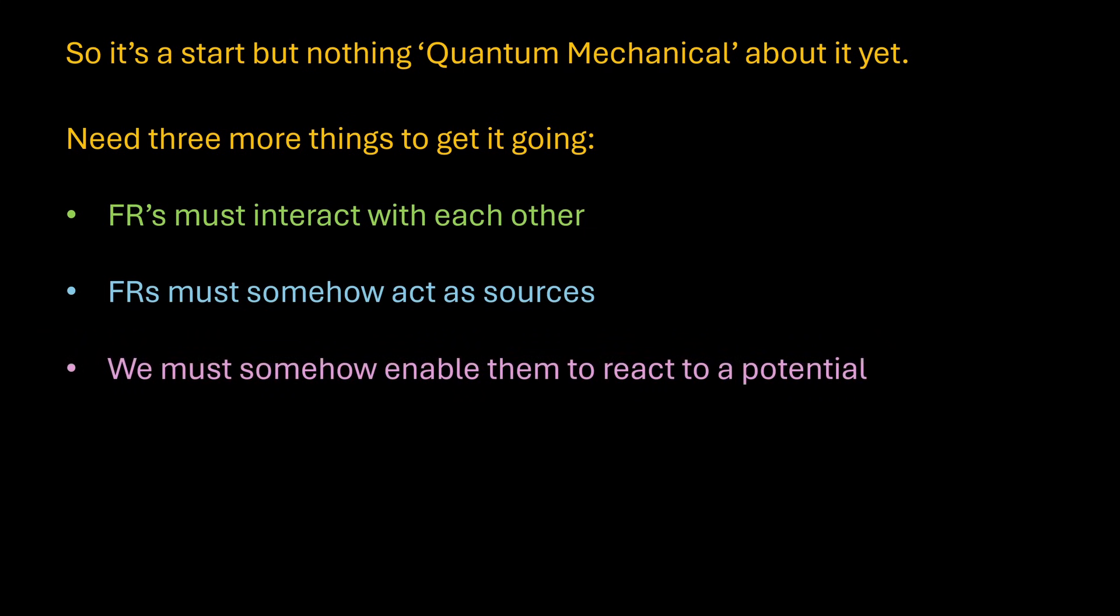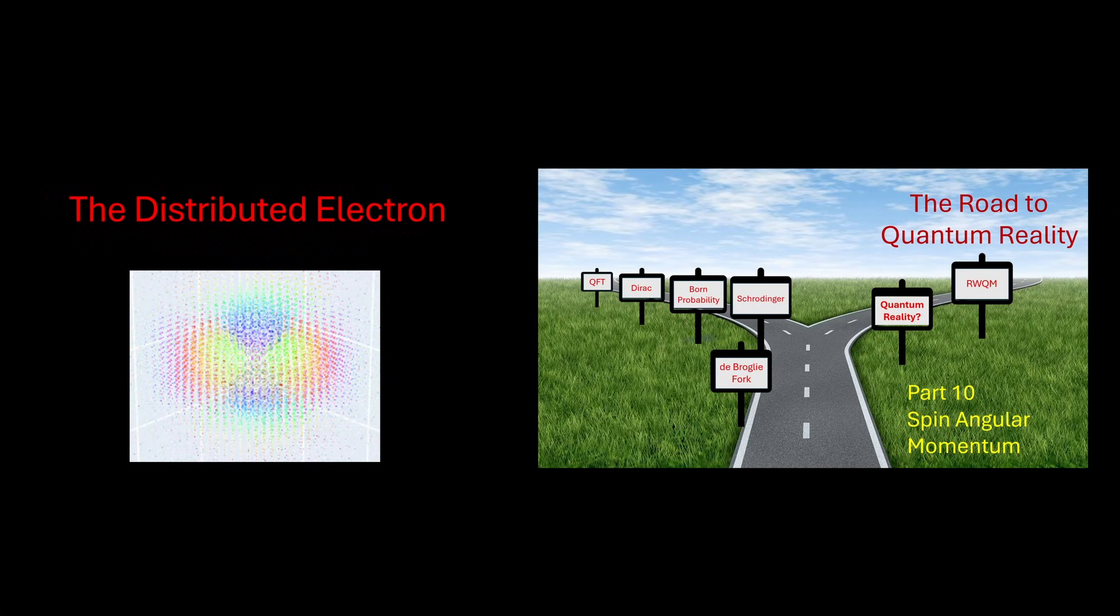To develop a candidate model we need three things. I have covered these in much more detail in the distributed electron video and the road to quantum reality series of videos which give full development of this new theory called real wave quantum mechanics, but I'm getting ahead of myself. We need the FRs in a grid to somehow interact with each other, the FRs to somehow act as sources by taking energy from the medium, and the amount of energy taken by the FRs to be controlled by some factor normally called the potential. It's easy to hang a charge on a point particle but we will have to be a lot more nuanced.